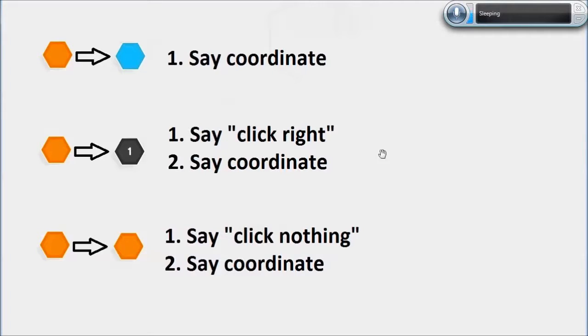To clear it, I have to say click right followed by the coordinate, and if I just want to move the mouse somewhere without clicking on it at all, I say click nothing and then the coordinate. And I'll put these in subtitles throughout the rest of the video.